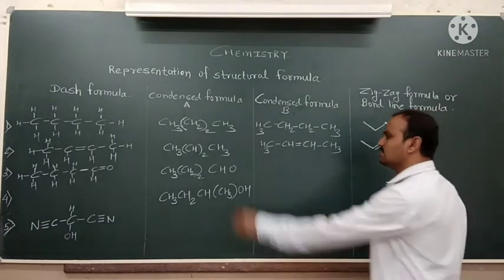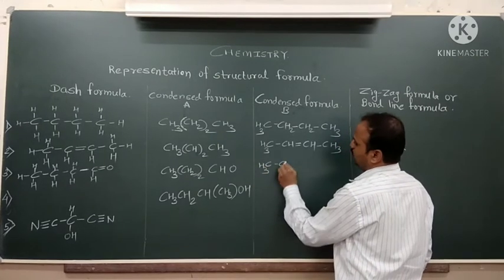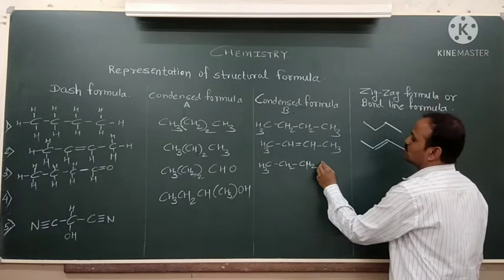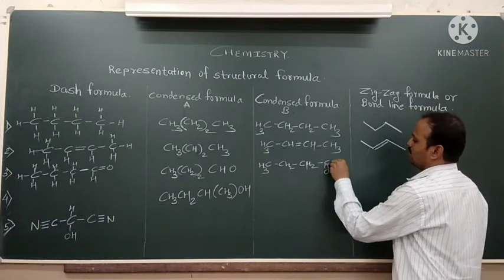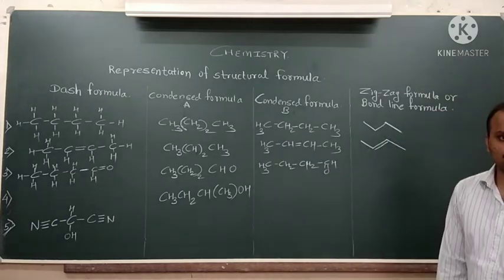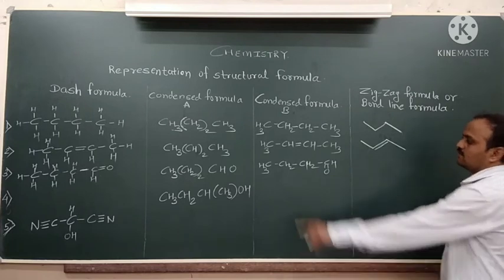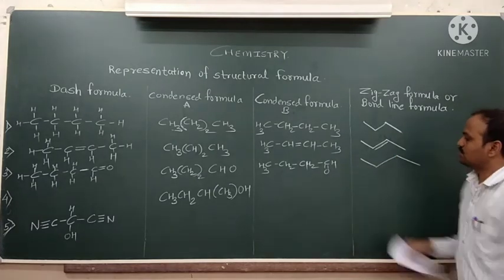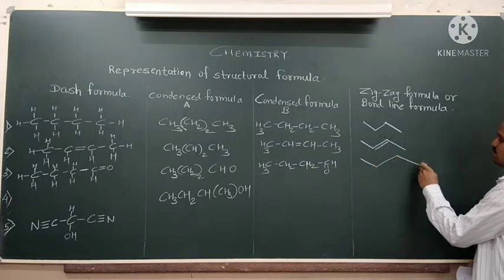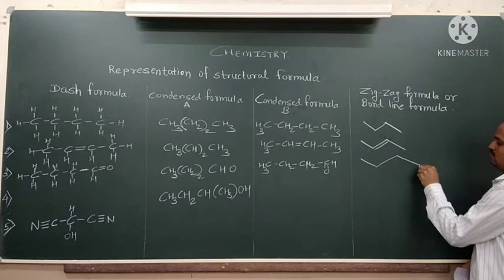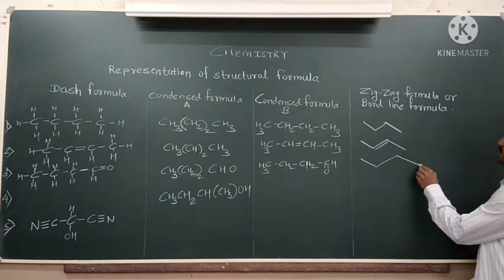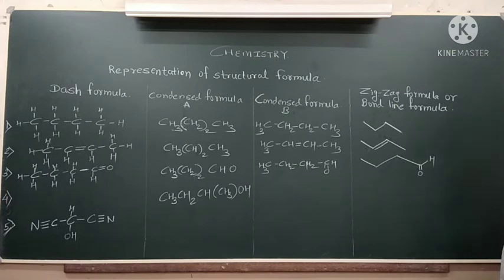When writing condensed formula, same. CH3, double bond CH2. Again, single bond CH2, single bond CH2. Last is CHO. CHO. Bond line formula. 1, 2, 3, 4. CH3, CH2, CH2, CHO. CHO or we can write like this also. This is CHO.